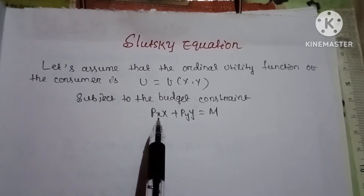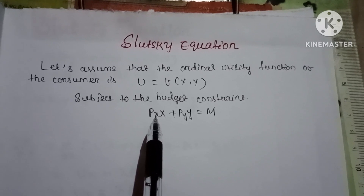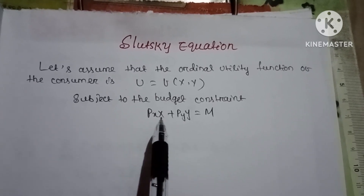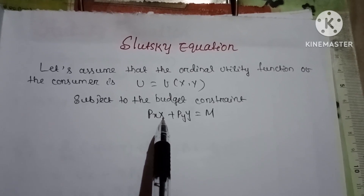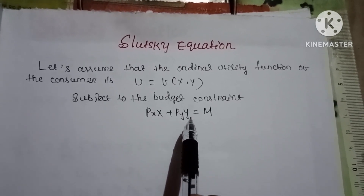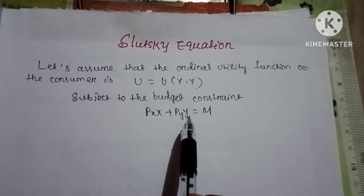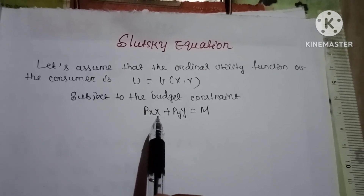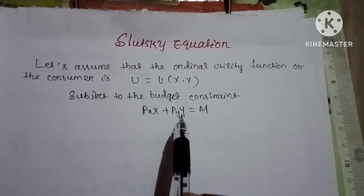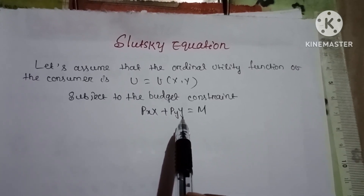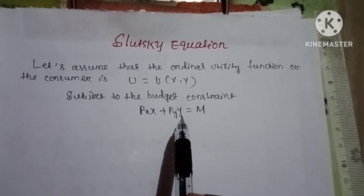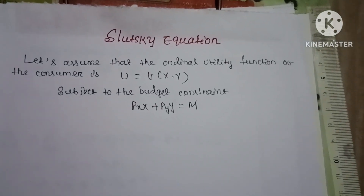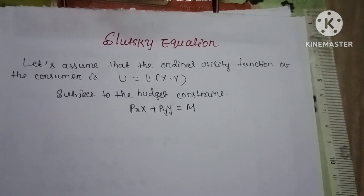Here, px represents the price of good x, py represents the price of good y, x represents the quantity of good x, y represents the quantity demanded of good y, px·x represents expenditure on good x, and py·y represents expenditure on good y. For maximization of utility we will apply the Lagrangian multiplier method.